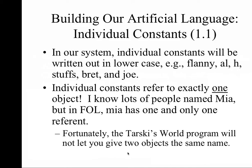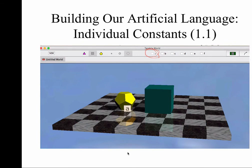Even though there may be multiple Mias in the universe, there is one and only one me — this particular object we're calling Mia. Tarski's World is really helpful in making sense of this: it does not let you give two objects the same name. Here's a screenshot of just the world pane in Tarski's World. There are two objects — a dodecahedron and a cube. The dodec is named A. When I click on the cube, that large green object, notice the letter A circled in red is grayed out — it can't be chosen. Tarski's World forces us not to make the mistake of treating two different objects as the same.